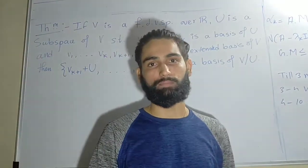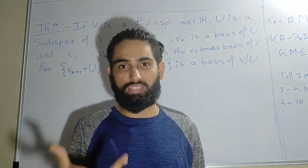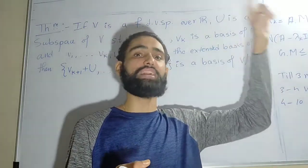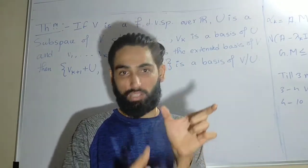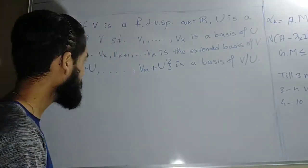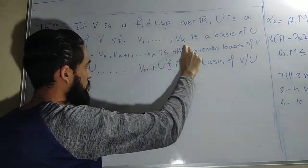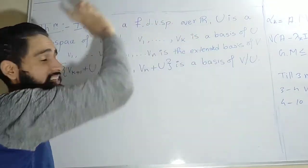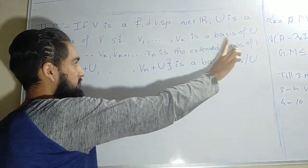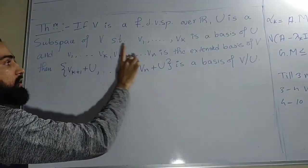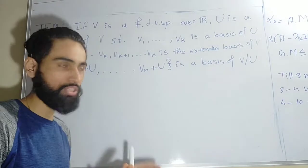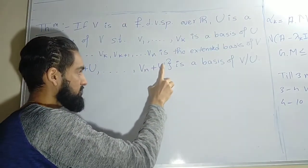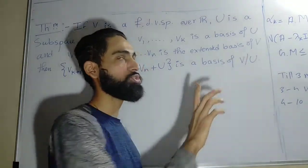What is the meaning of extended basis? If I have a basis for a subspace, I add a few more elements to make the basis of the entire vector space — that new basis is called the extended basis. So v1 through vk is a basis of U, and v1 through vn is an extended basis of V. Given this, the cosets vk+1+U through vn+U are nothing but the basis of the quotient space V/U.